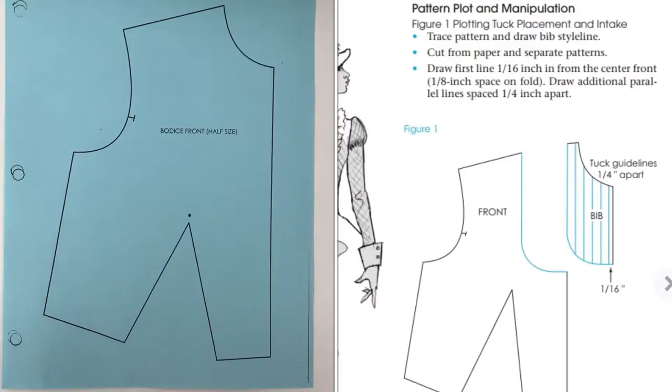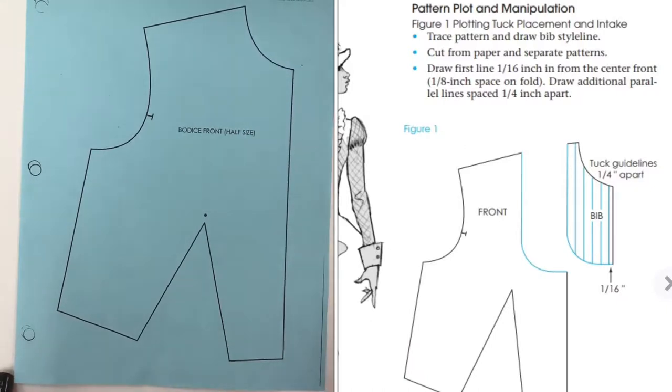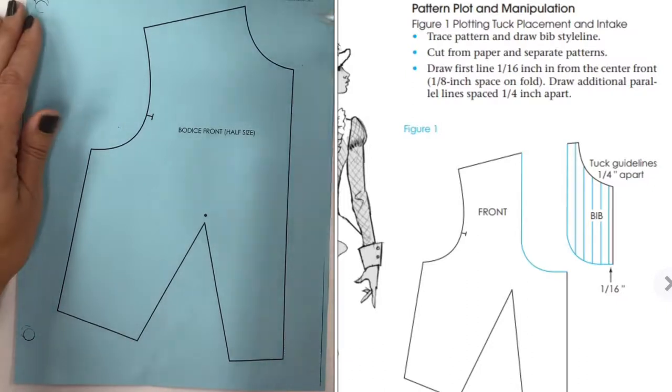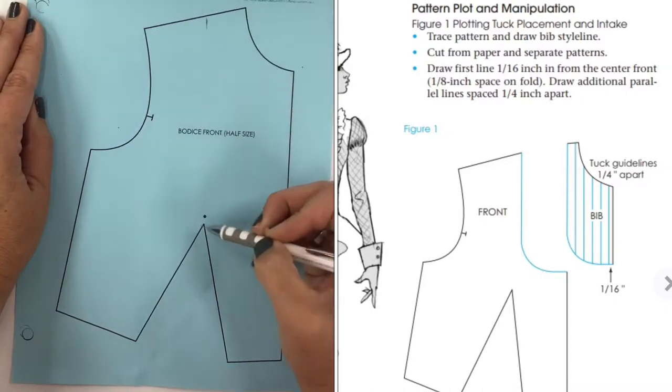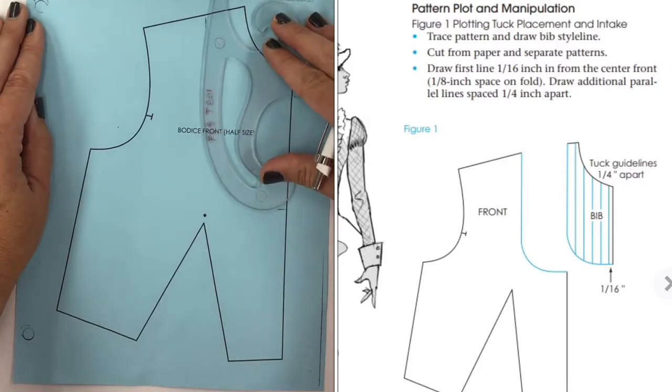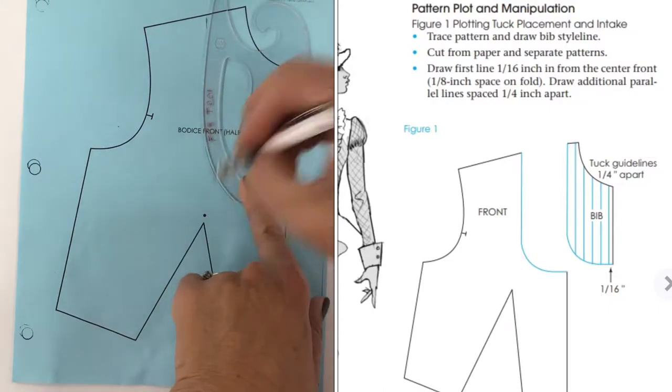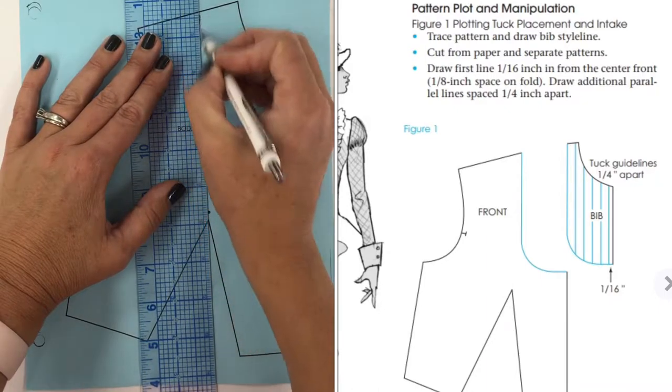Figure one, pattern plot and manipulation. We need our one dart sloper to do this. They want us to go ahead and draw our bib style line. They don't really tell us how to draw it, it's kind of up to you. It's just a style line, you're the pattern maker, you decide. You want to mimic the illustration. To me it looks like it's mid-shoulder and above the dart as well. We can use our curved ruler if we'd like to. There's not really a right or wrong answer.